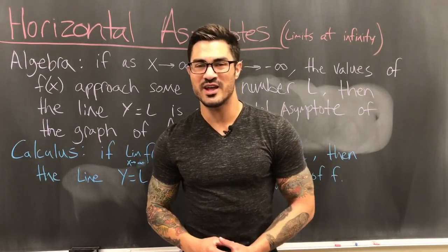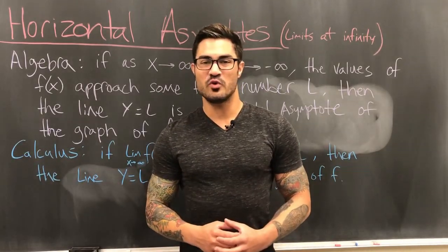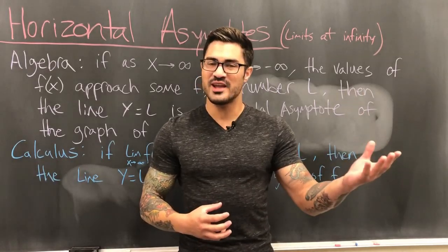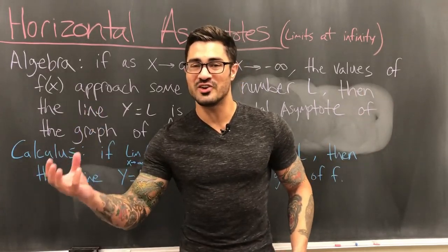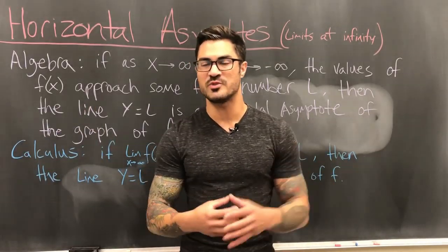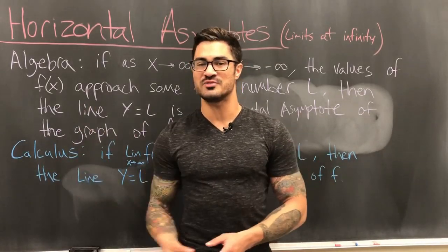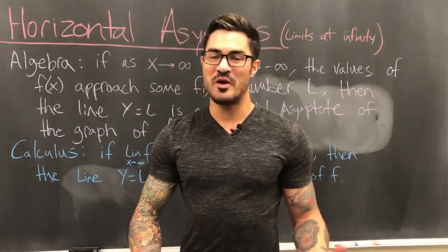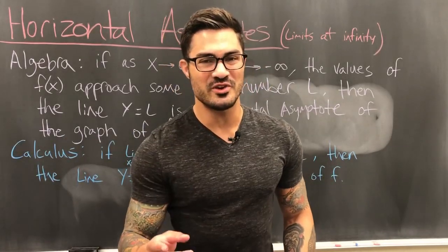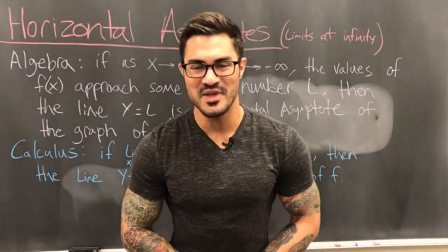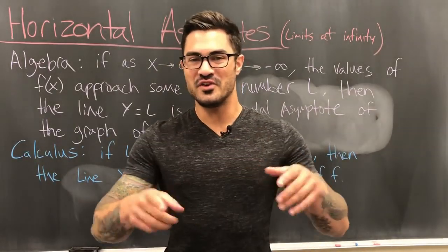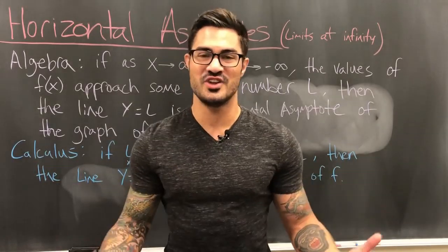I want to relate our understanding of horizontal asymptotes from algebra and pre-calc to what we learn in calculus, and I think we can make some pretty cool connections. But first, let's break the myth that a horizontal asymptote is just a horizontal line that the function never crosses — because that's just not true.